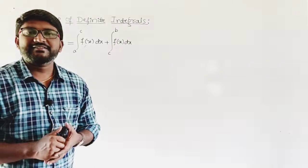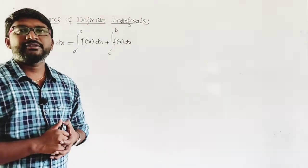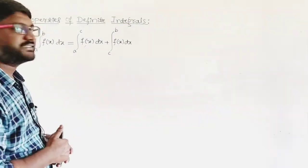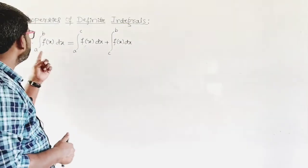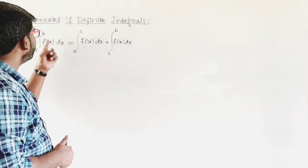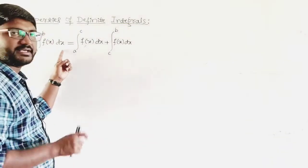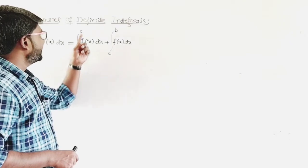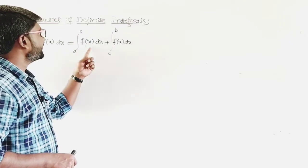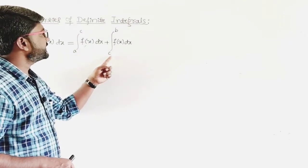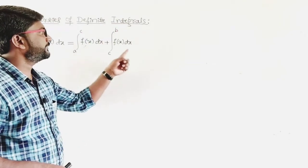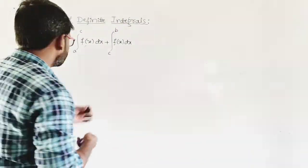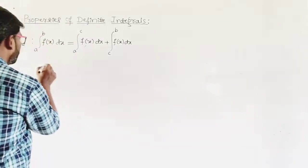Property P2 states: integral a to b of f(x) dx equals integral a to c of f(x) dx plus integral c to b of f(x) dx. Let us go ahead with the proof.